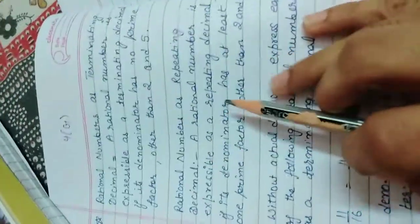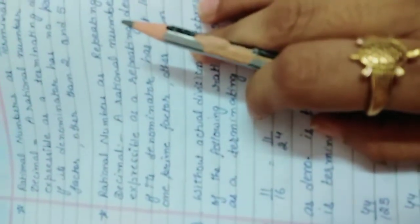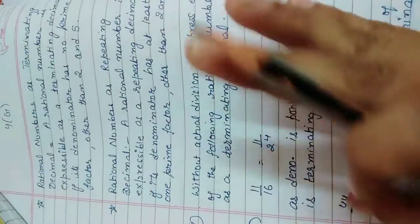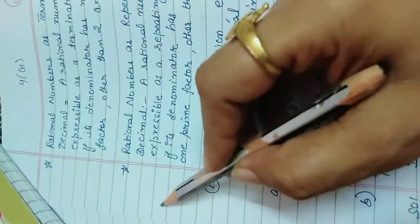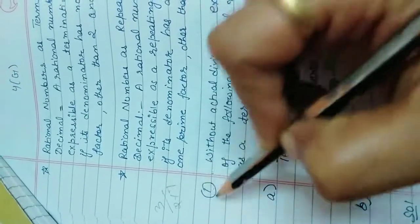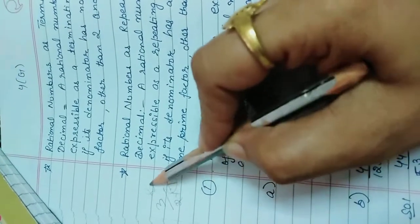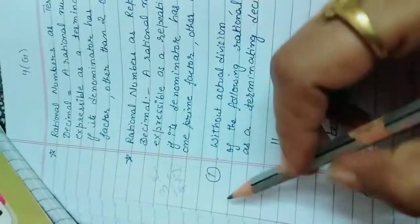But if you are having another factor other than 2 and 5, it means it is not going to end with zero. If you have one number as 2 and another number as anything other, suppose your denominator is 3 by 2 into 7, so this is going to be repeating. This cannot be terminating.